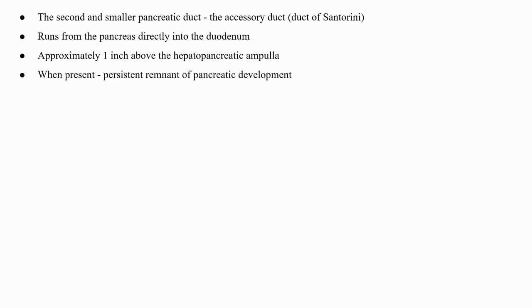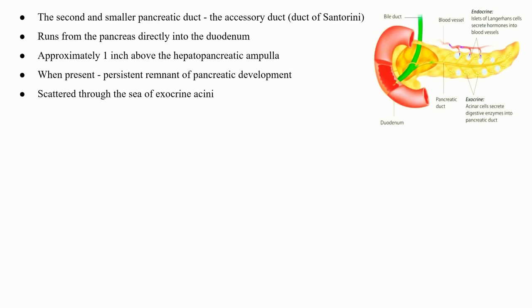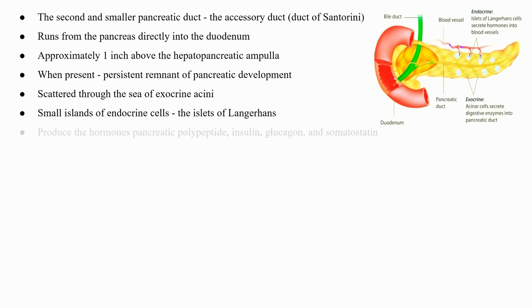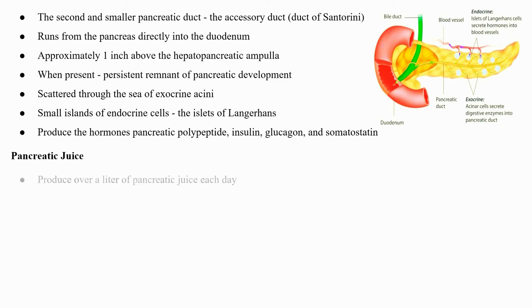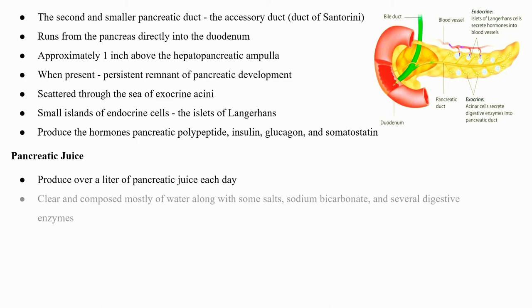Scattered through the exocrine acini are small islands of endocrine cells called the islets of Langerhans. These vital cells produce the hormones pancreatic polypeptide, insulin, glucagon, and somatostatin. The pancreas produces over a liter of pancreatic juice each day; unlike bile, it is clear and composed mostly of water along with some salts, sodium bicarbonate, and several digestive enzymes.